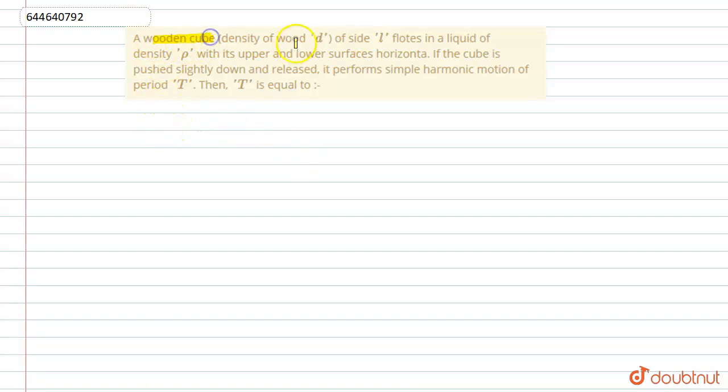The question says: A wooden cube of density d and side l floats in a liquid of density ρ with its upper and lower surfaces horizontal. If the cube is pushed slightly down and released, it performs simple harmonic motion of period T. We have to find the time period of this simple harmonic motion.